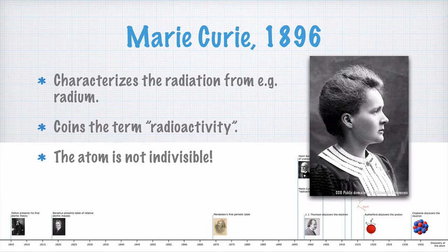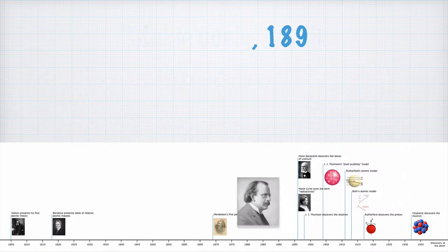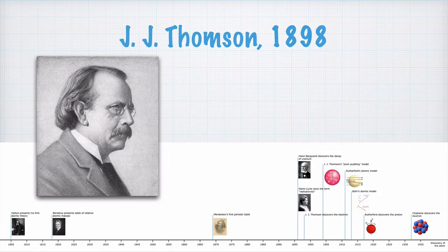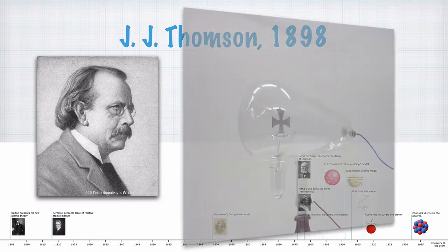But this, of course, begs the question. If the atom isn't indivisible, what is it made of? A part of the answer came from the British physicist J.J. Thomson and the experiments he made. He used a cathode ray tube like this one.